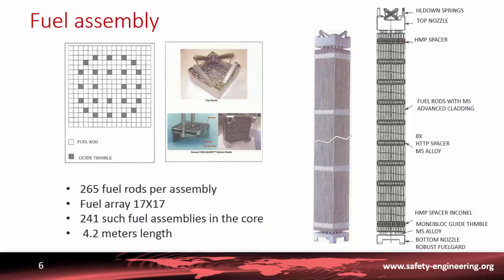In a typical reactor core, there are around 200 such fuel assemblies, and the length from top to bottom is about 4.2 meters. At the two extremities of the fuel assembly there are elements to allow transport of the fuel assembly when loading or defuelling from the core. We will now see a small video giving more detail about the fuel.